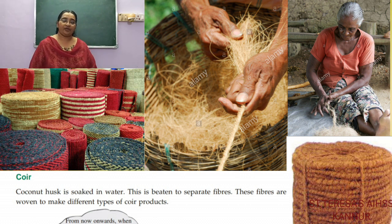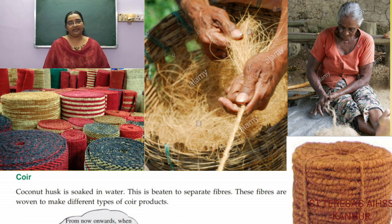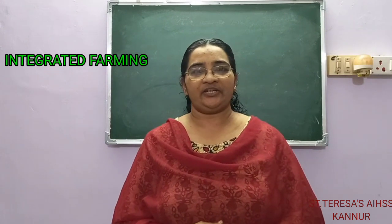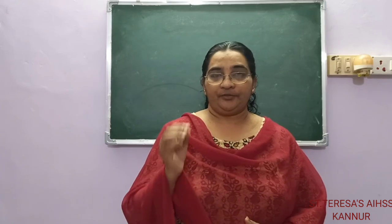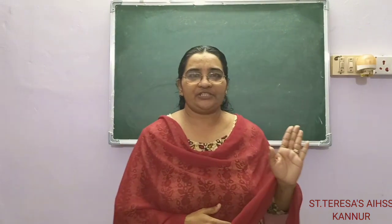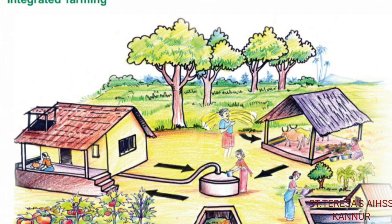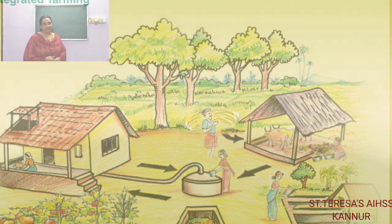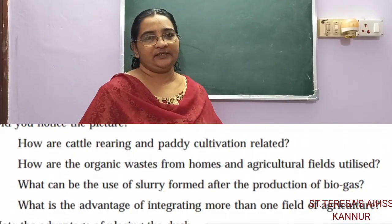These are some of the main non-food plants grown in our country for our daily needs. Now we move on to something called integrated farming. From the word itself we can understand it is a combination of things. Looking at the picture in your textbook, we can see a house, a cow shed, a biogas plant, a pond, a vegetable garden, a compost pit, and fields with lots of trees in the compound.